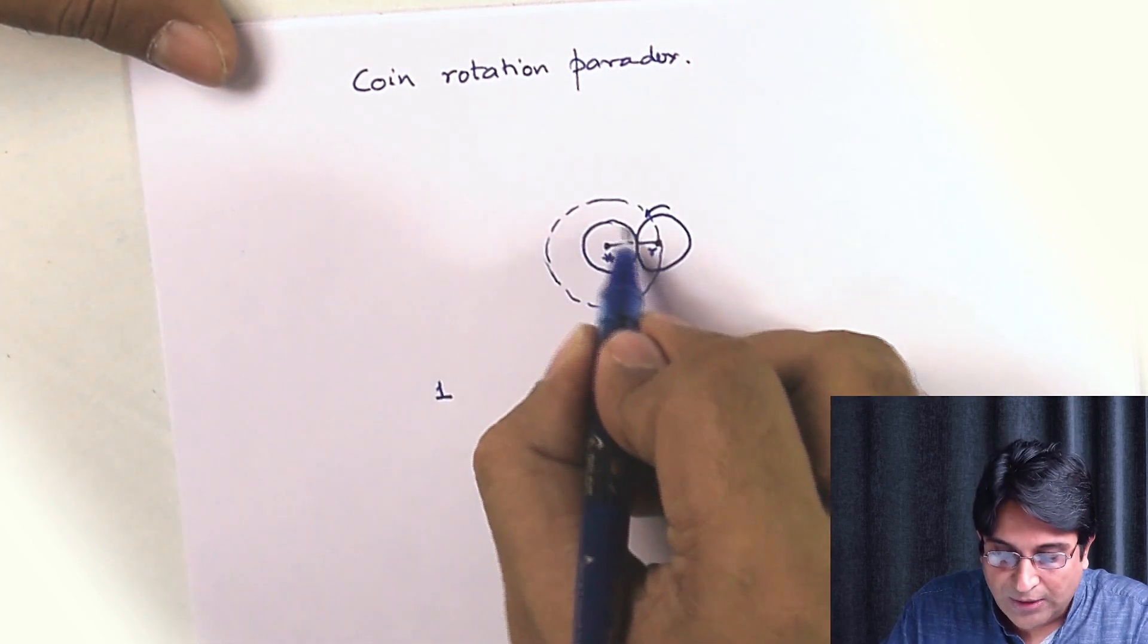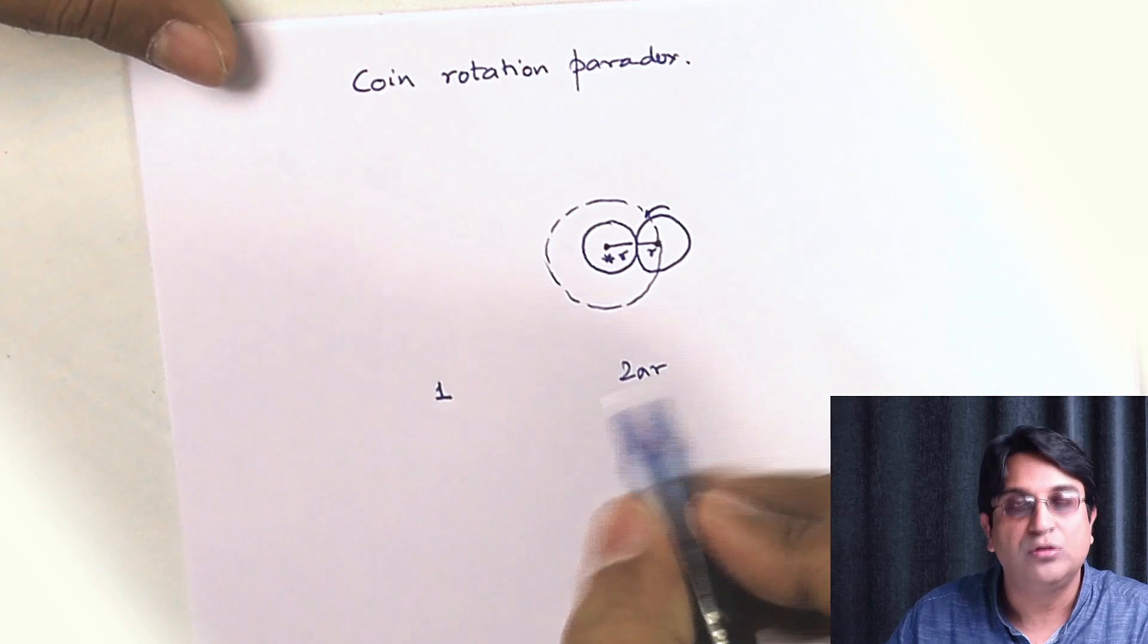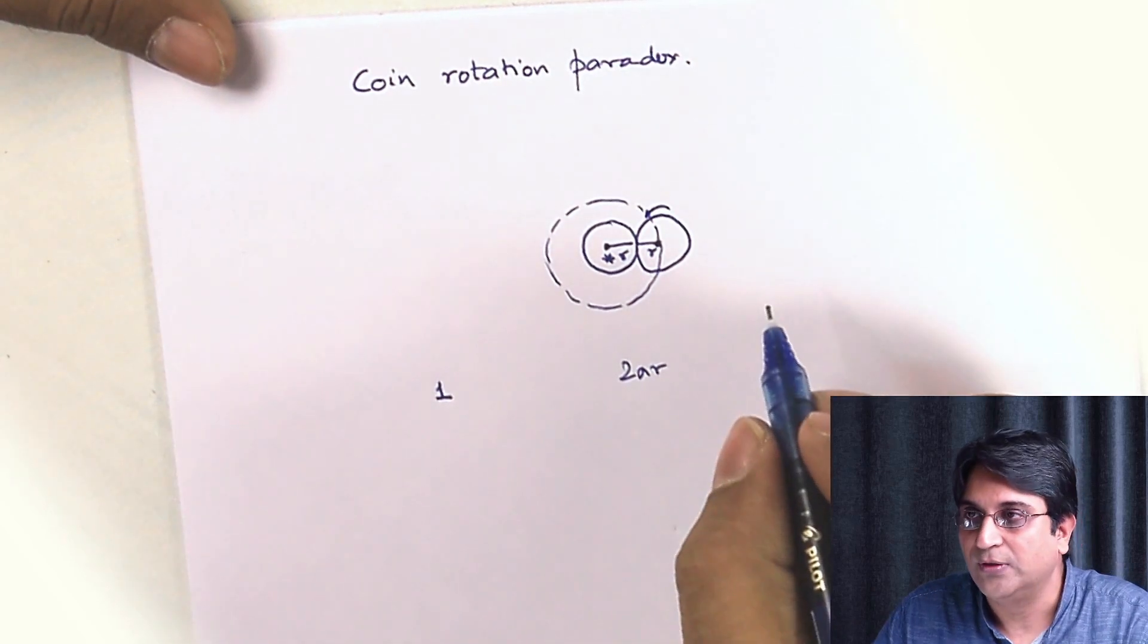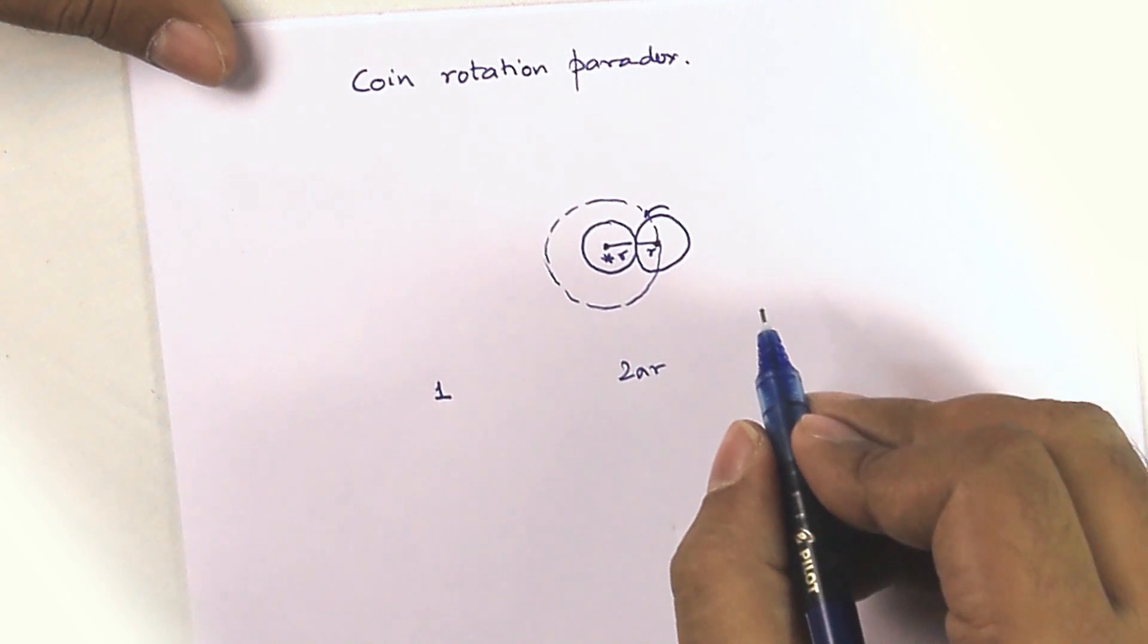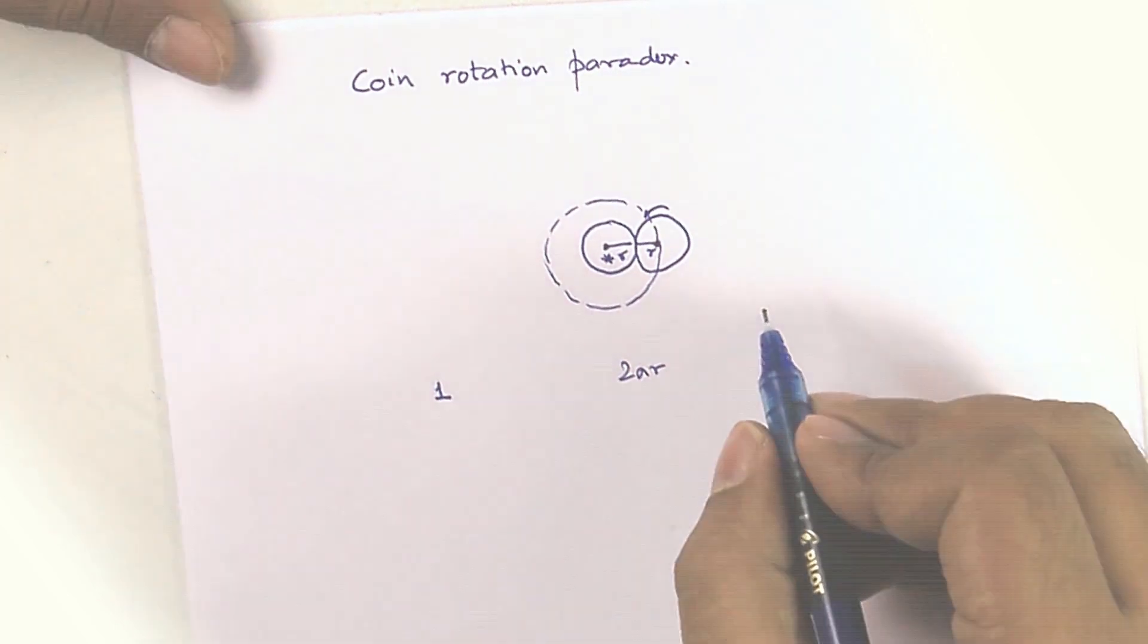So therefore, to travel this distance 2πR, it should rotate once. But it so happens that it does not rotate once but rotates more than that. How does that happen? Well, we'll have to look at a small animation to understand that.